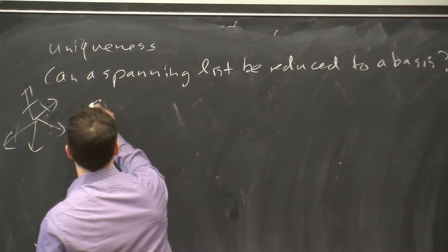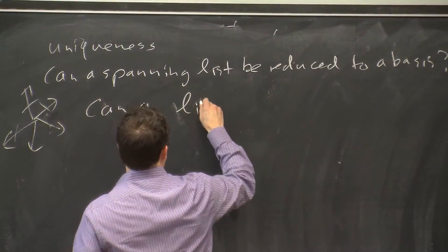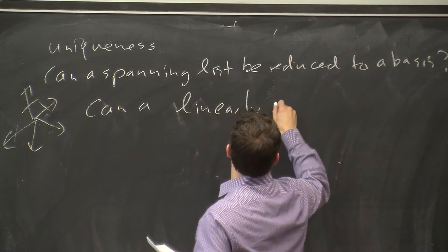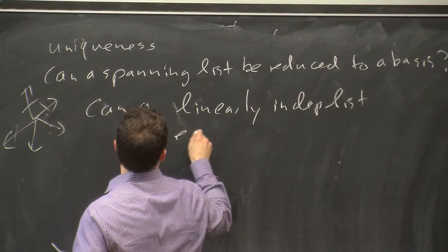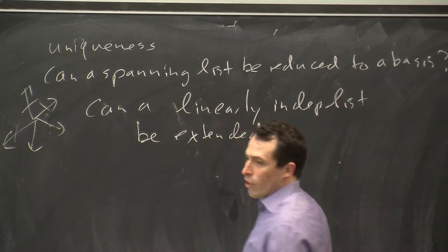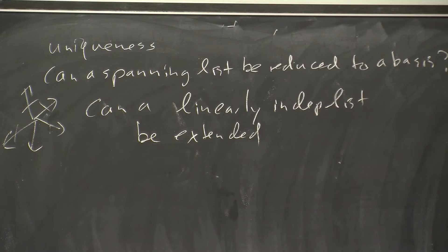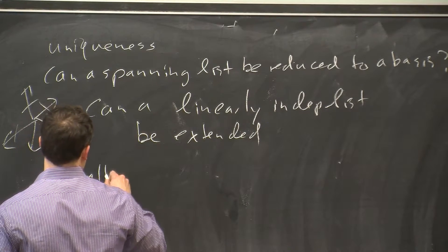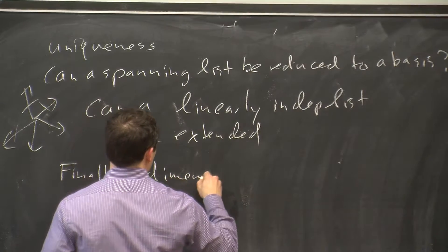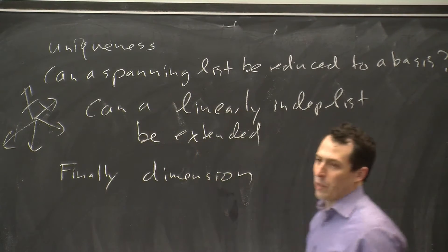Similarly, can a linearly independent list be extended? If we start with a large vector space and a few independent vectors that don't span everything, can we add more vectors systematically to obtain a basis? And finally, at the end of today we'll talk about what dimension is — how we define the dimension of a vector space and why it's a good notion of size.